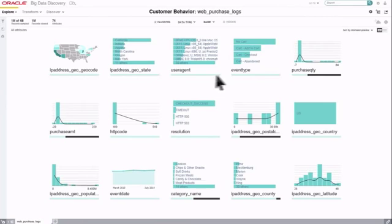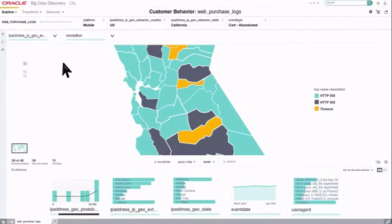Next, explore shows how the data looks. We can visualize the attributes, sorted by their potential, and combine them to see how they relate.